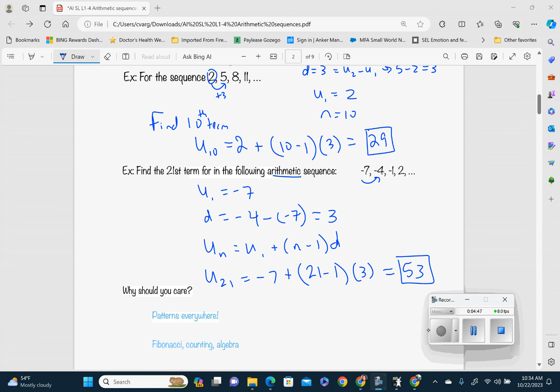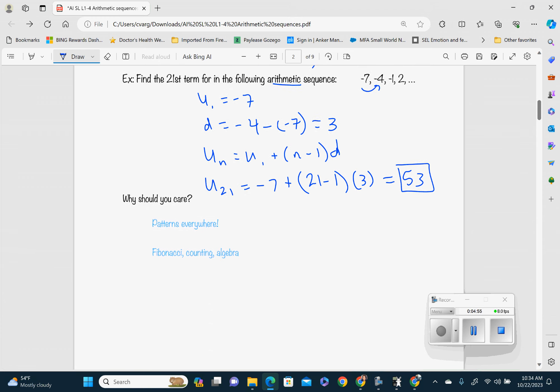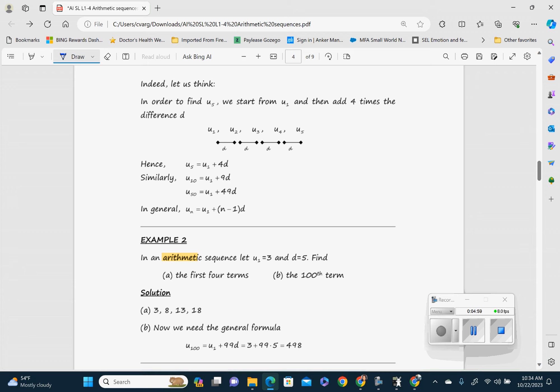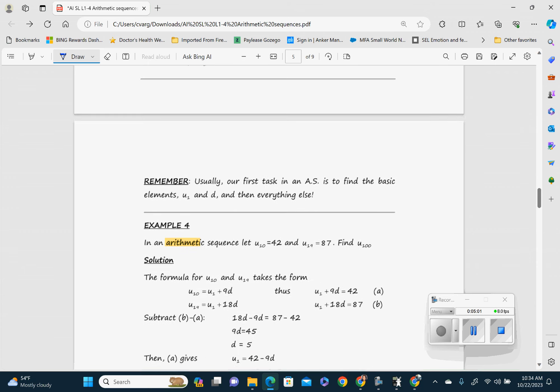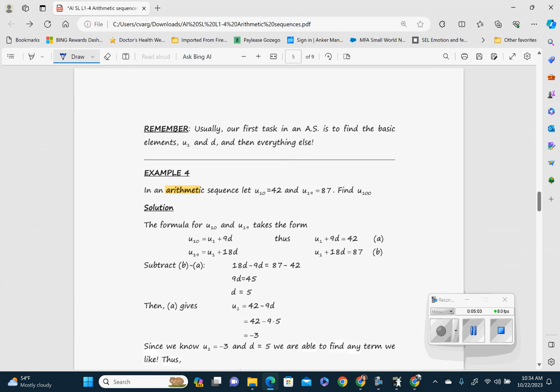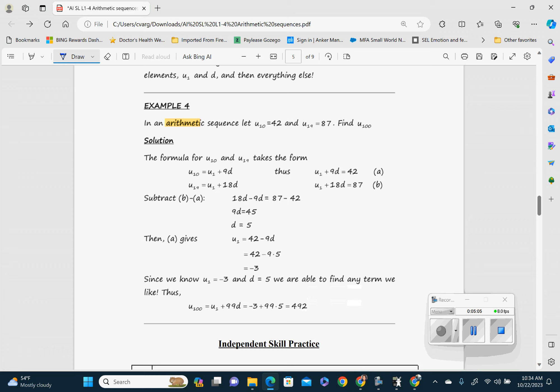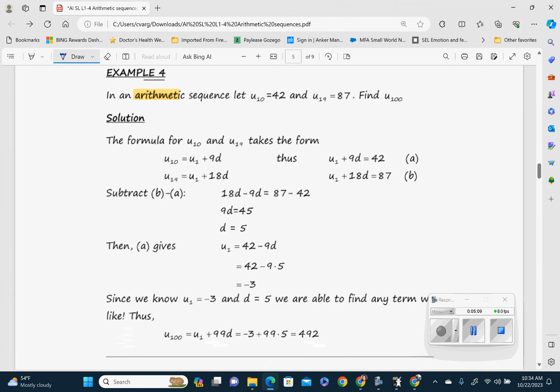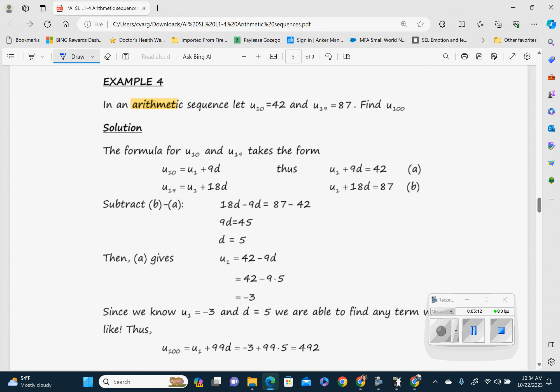So when would this come in handy? There are literally patterns everywhere. There are two types of sequences called arithmetic, and we're going to learn another one called geometric. Counting, algebra, Fibonacci. There's a couple of examples here. I do want to go ahead and stress the fourth one. One, two, three are pretty straightforward. But let me go over this one with you just to make sure that you are good with it because this one's a little bit different.